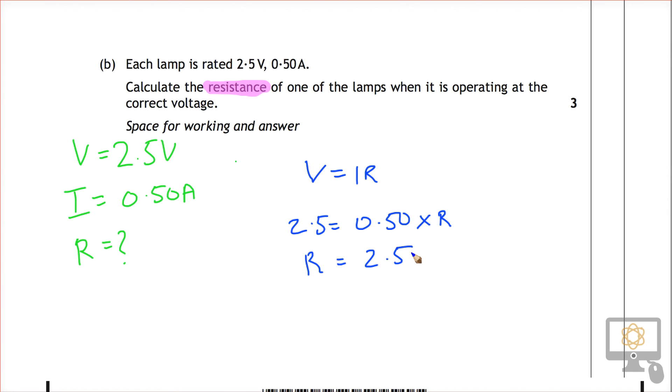R is equal to 2.5 divided by 0.50. That means that R is equal to 5.0 ohms, and I do 5.0 because our answer should be to two significant figures. Bear in mind that 5 ohms on its own without the point zero would be accepted as well because the SQA allow one less significant figure than you should have.